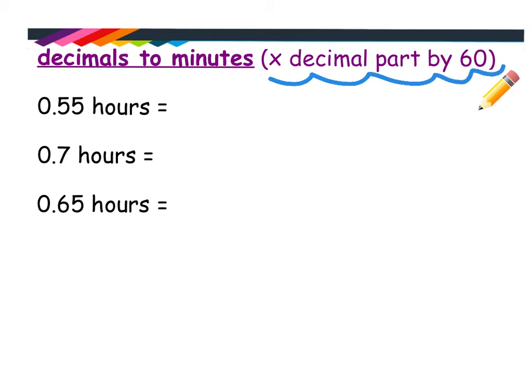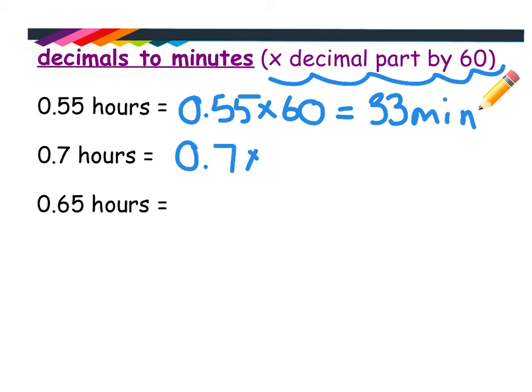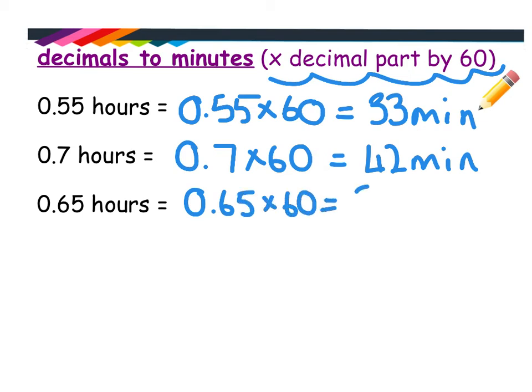So for the first one, you're just going to do 0.55 times 60 onto your calculator. And that gives you 33 minutes. So you would say that that was 33 minutes. 0.7 times 60 will give you 42 minutes. Now, if you remember that 6 minutes was 0.1, that's really just 6 times 7, which is 42. So that's maybe a quick way to do it without having to go into your calculator. And for the last one, you're going to do 0.65 times 60. And that gives you an answer of 39 minutes.